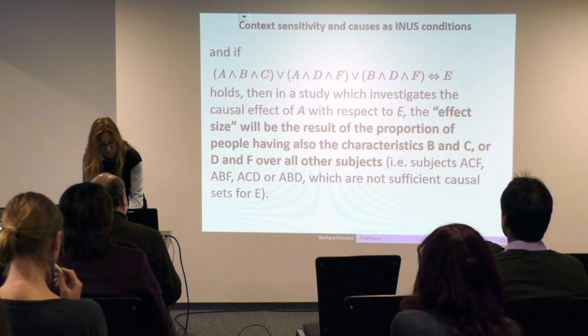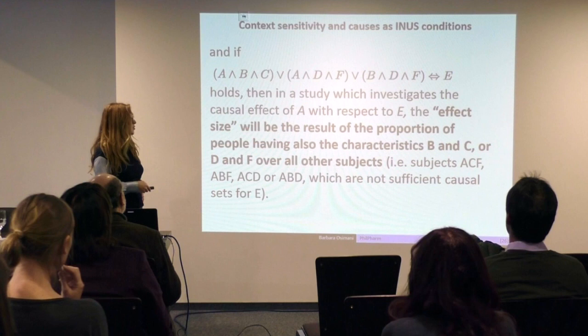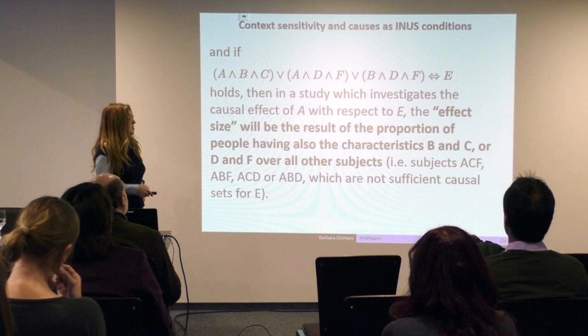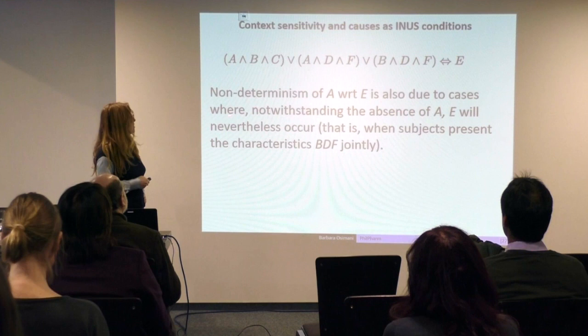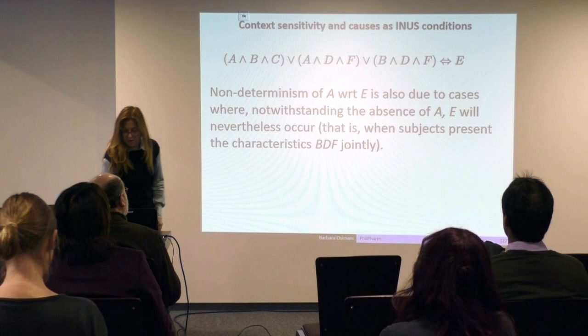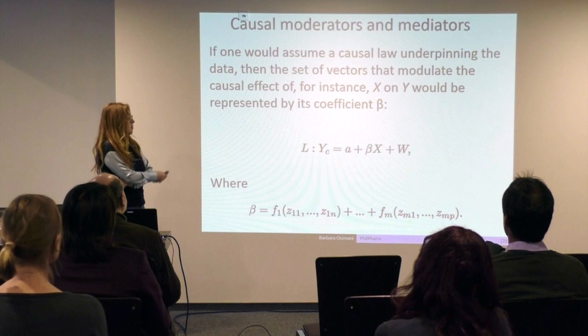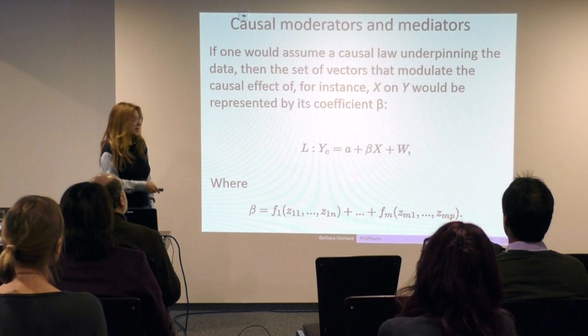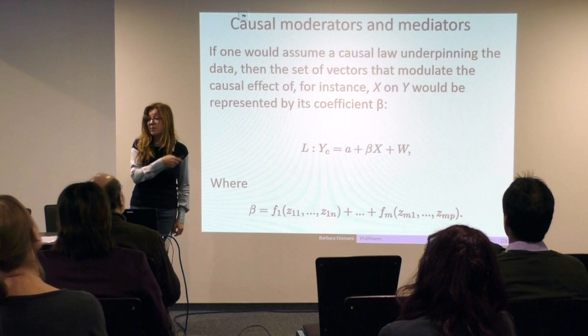In a study which investigates the causal effect of A with respect to E, the effect size would be the result of the proportion of people having also the characteristics B and C, or D and F, over all the other subjects. The other subjects would be, for instance, A-C-F or A-D-F or A-C-D or A-B-D, which are not sufficient for E. Non-determinism of A with respect to E is also due to cases where, notwithstanding the absence of A, E nevertheless occurs. If one would assume a causal law underpinning the data, then the set of vectors that modulate the causal effect of X on Y would be represented by its coefficient beta. Beta, for Nancy Cartwright, is a conjunction of contextual vectors — functional vectors such as age, genetic makeup, and so on — things that we saw with Halin. The point is that we are not aware of all of them.